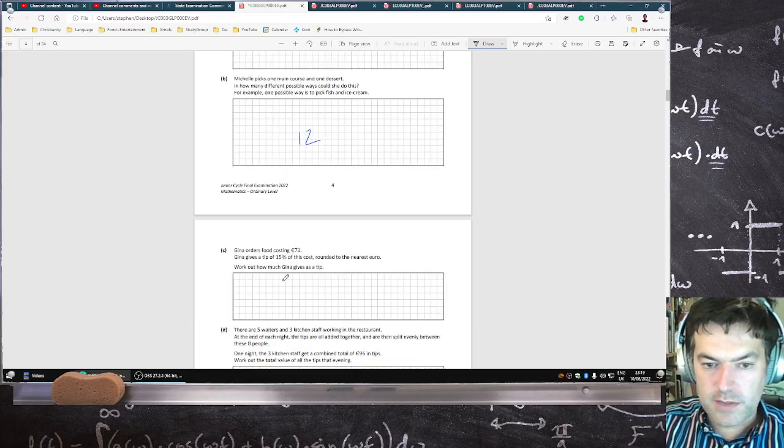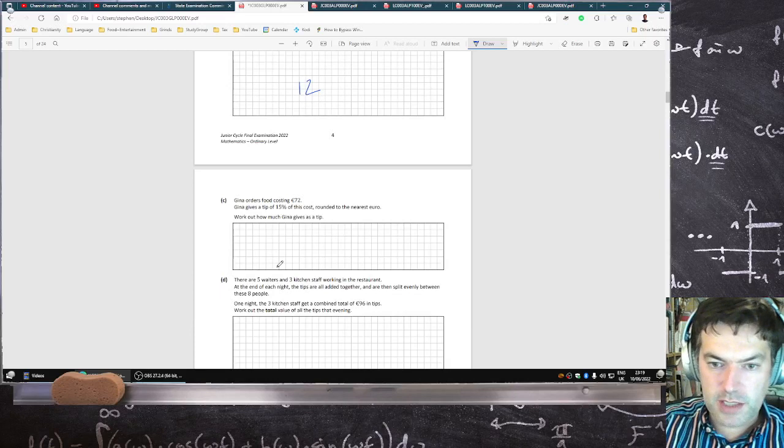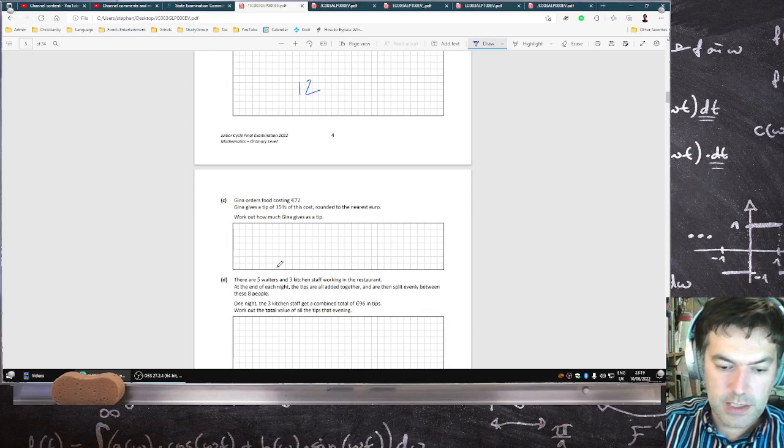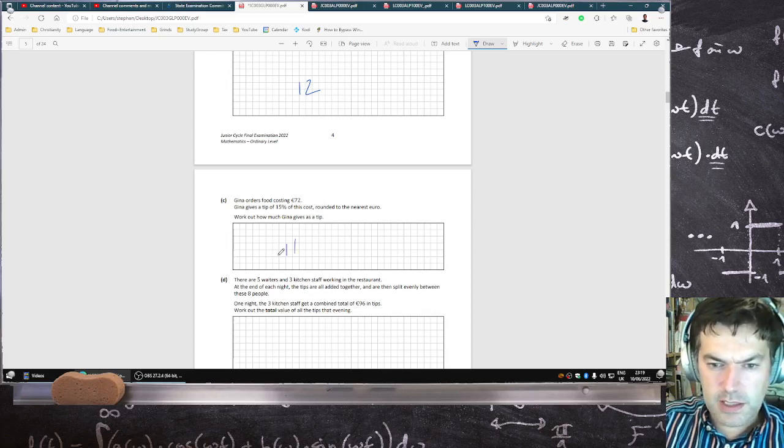Gina orders food costing 72 and she gives a tip of 15% rounded to the nearest euro. How much tip does she give? So, 15% of 72 to the nearest euro is 11 euros.